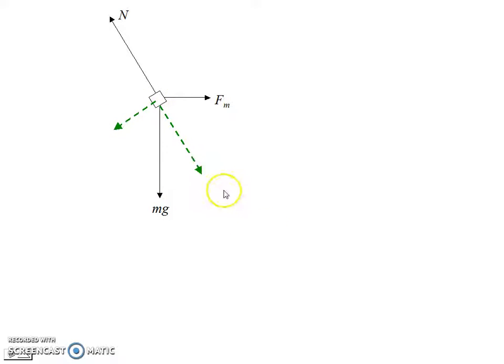So of course, weight has to be resolved into its components. Component down the incline, component into the incline. And it's traditional to scribble out the original force, which I've drawn here very crudely. And of course, we know mg sine theta points down the incline, mg cosine theta points into the incline. You don't have to find theta. We know this happens every single time.